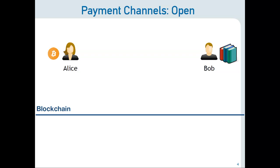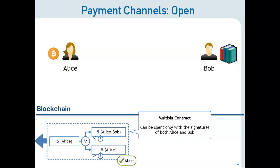Instead, what we can do is create what is called an opening channel transaction, in which Alice takes her coins — five coins in this input, for example — and transfers them to what is called a multi-sig contract, or an output shared by the public keys of Alice and Bob. This intuitively means that when the coins are transferred to this multi-sig contract, or escrow account, they can only be transferred further if Alice and Bob agree. Because Bob could always go offline, we need what's called a refund output, so that after some time Alice can recover her coins without Bob's collaboration.